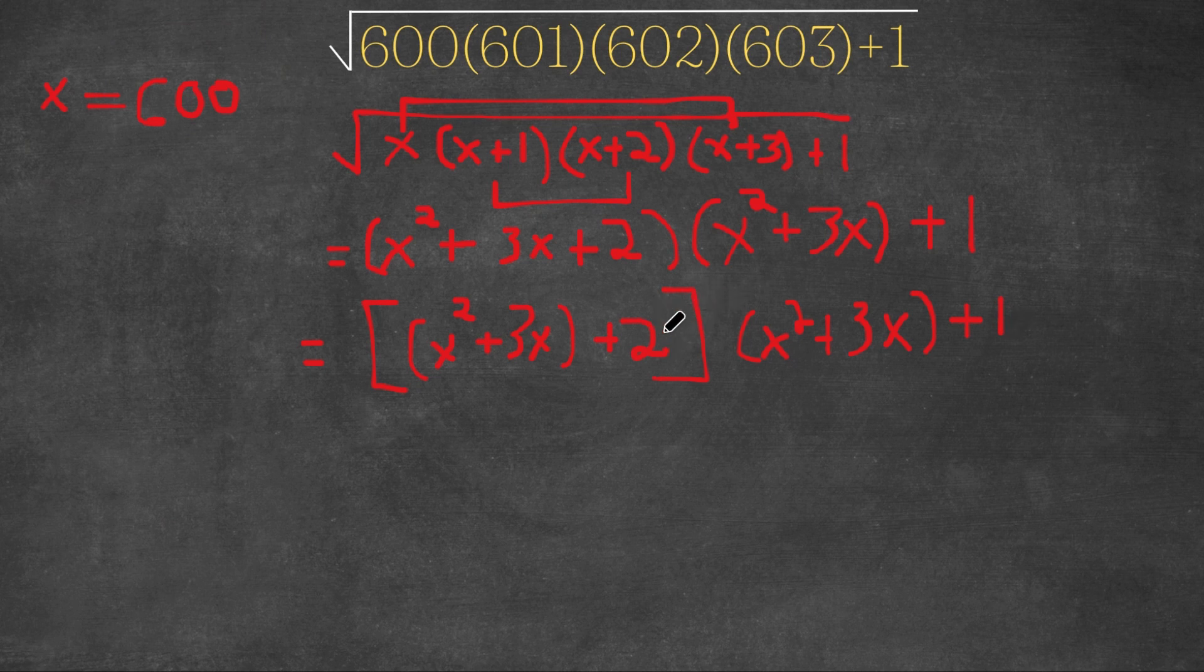So now what we're going to do is multiply this 2 with our x squared plus 3x. So this equals x squared plus 3x whole squared. Because, remember, these two multiply, and we add this with 2 times x squared plus 3x. And we still have our plus 1. So what we did was we multiplied what was in these brackets with everything outside.